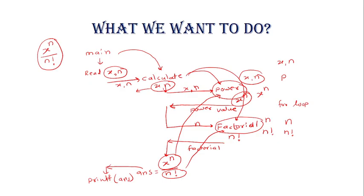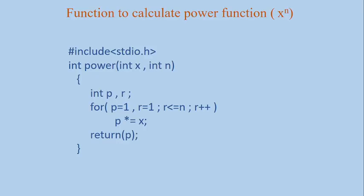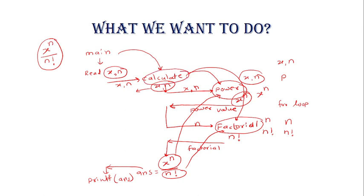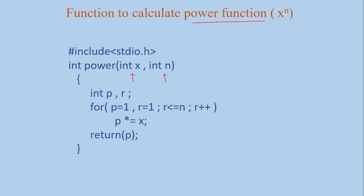Now the first part is to calculate power. This power function receives two values: value of x and value of n — because we are calling this power from calculate and we are passing value of x and n. This part calculates x raised to n, and then we are returning value of p. So this power function receives x and n and returns p, where p is x raised to n.